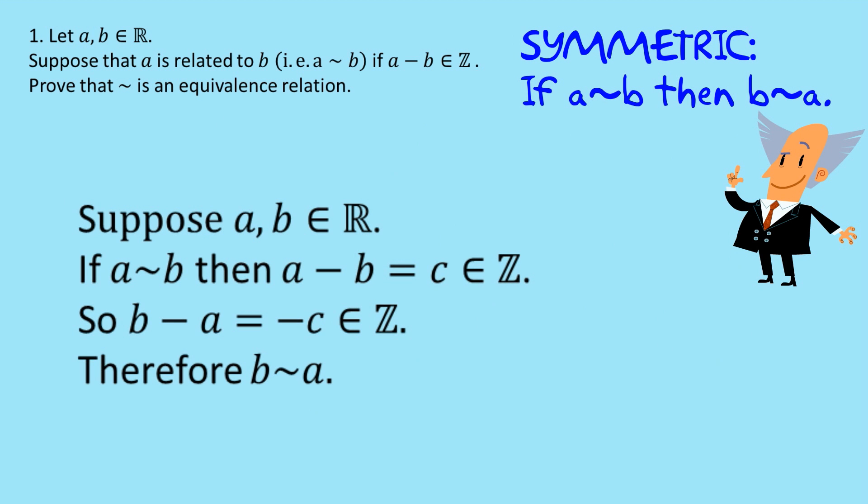So we start off with, just say suppose a and b are elements of the real numbers. And now we just do a proof. We start with what we know, we end up with what we need to show, and in the middle, we just show how to go. So let's do that. So we start with if a is related to b, then a minus b is equal to c, which is an element of z. That's important. If a is related to b, then the difference has to be an integer. Then we say so b minus a must equal negative c, which is also an integer, and therefore b is related to a.